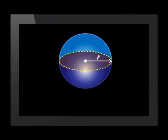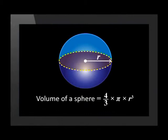A sphere is a solid round figure with every point on its surface equidistant from its center. The formula for the volume of a sphere is 4 over 3 times pi times the radius cubed.